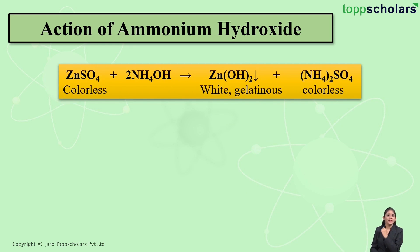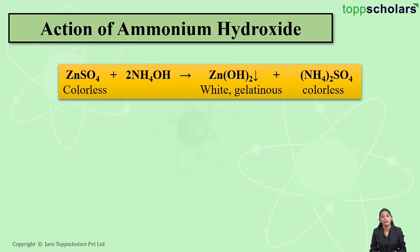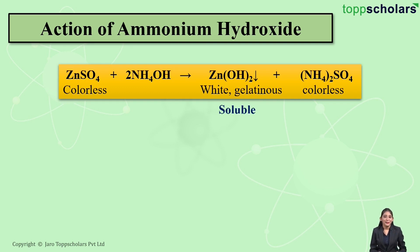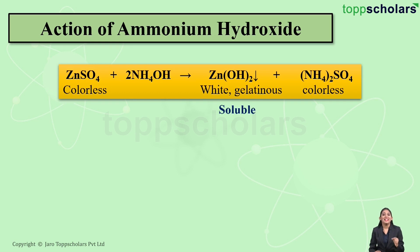Let us move on to zinc sulfate, which is a colorless solution. If I add ammonium hydroxide to this solution, it results in the precipitation of zinc hydroxide as a white colored gelatinous precipitate, along with ammonium sulfate which is colorless. Zinc hydroxide is soluble in excess ammonium hydroxide. So if you get a white gelatinous precipitate that is soluble in excess ammonium hydroxide, the salt contains Zn²⁺ ion.